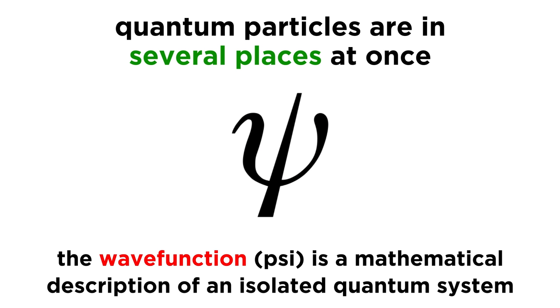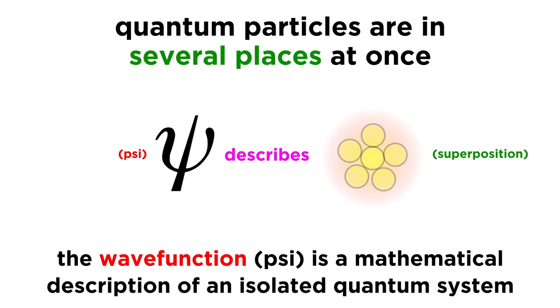That's why we have the wave function, which is a mathematical description of an isolated quantum system, given by the Greek letter psi. This gives us an idea of the distributed presence of a quantum particle. It describes the state of the particle as a superposition of all possible states.